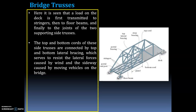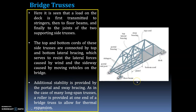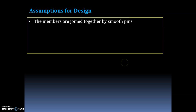The top and bottom cords of the side trusses are connected by top and bottom lateral bracing, which resists lateral forces caused by wind and sway caused by moving vehicles on the bridge. Additional stability is provided by portal and sway bracing. A roller is provided at one end of the bridge truss to allow for thermal expansion.